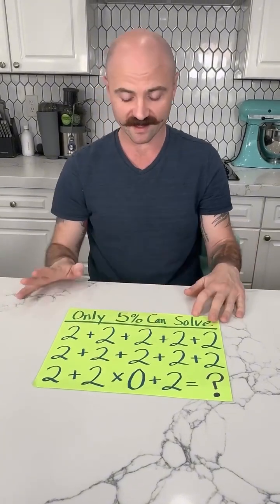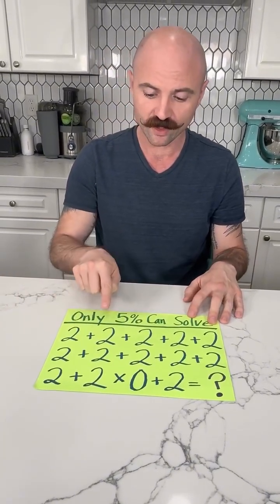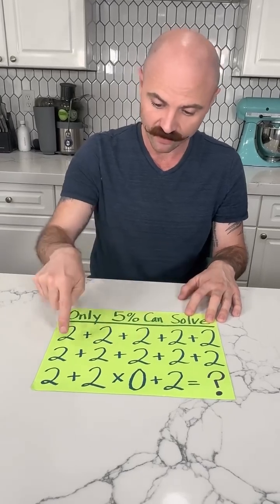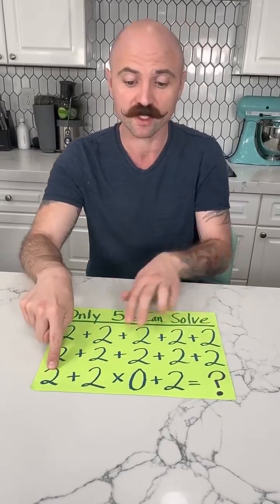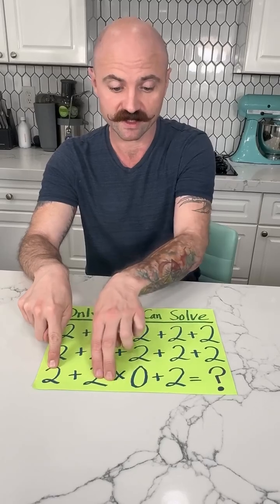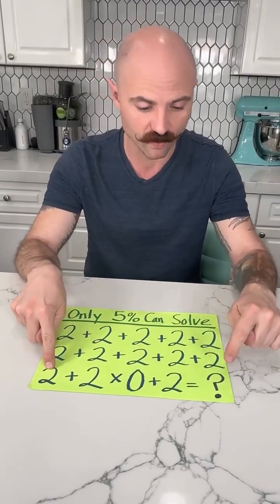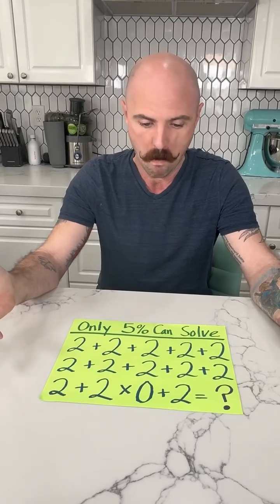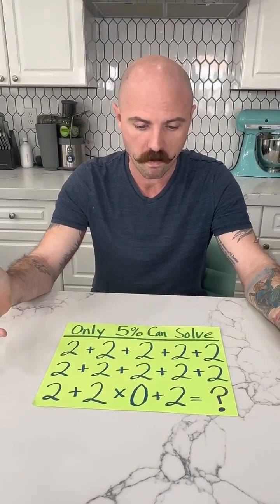So if that's the case, 2, 4, 6, 8, 10, 12, 14, 16, 18, 20, 22 — this doesn't exist — 22 plus 2 would be 24. So you think it's 24? Yeah. It has to be, right?